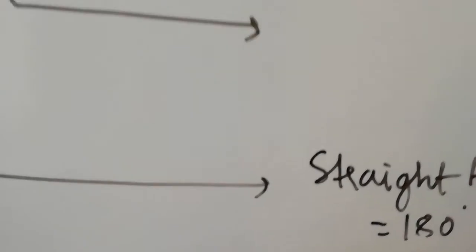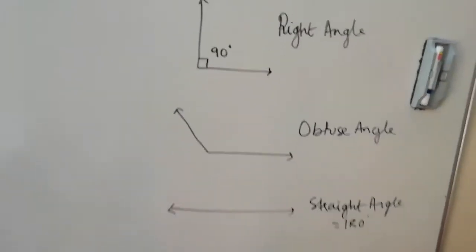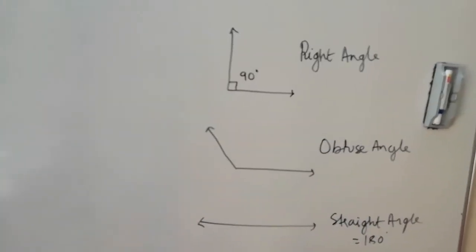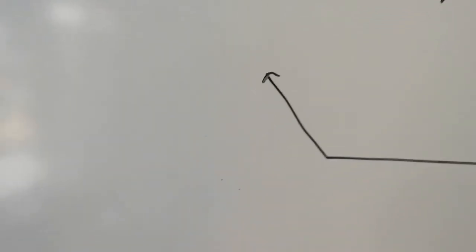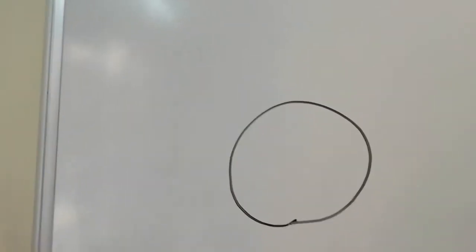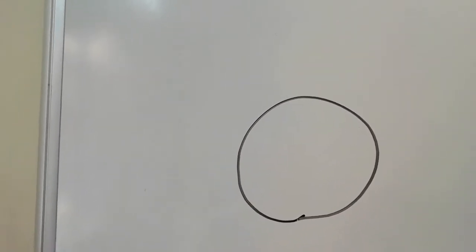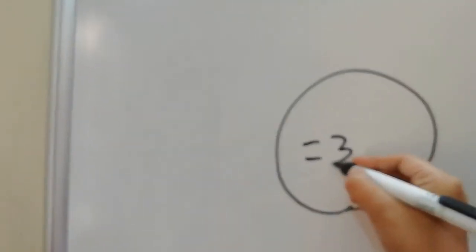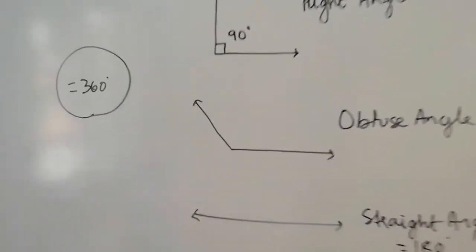A straight angle is equal to 180 degrees. So we have learned acute angle, right angle, obtuse angle, and straight angle. And when this line is completely curved into a full circle, the degree of this angle is equal to 360 degrees.